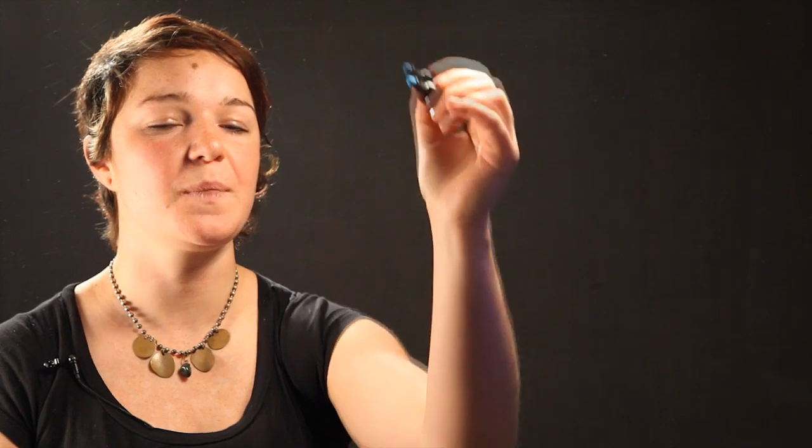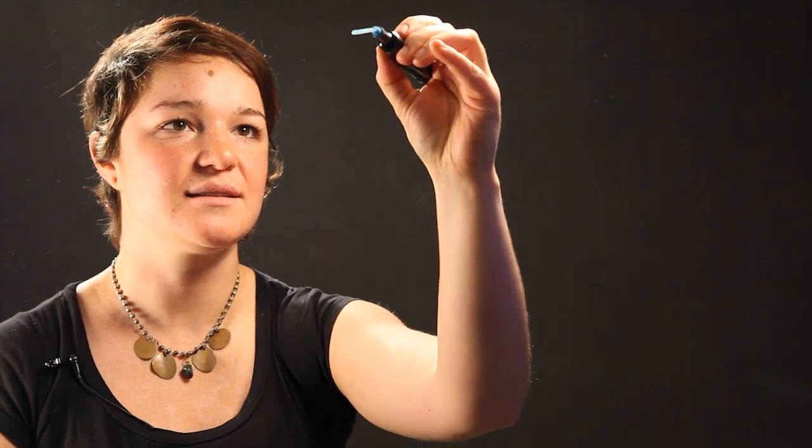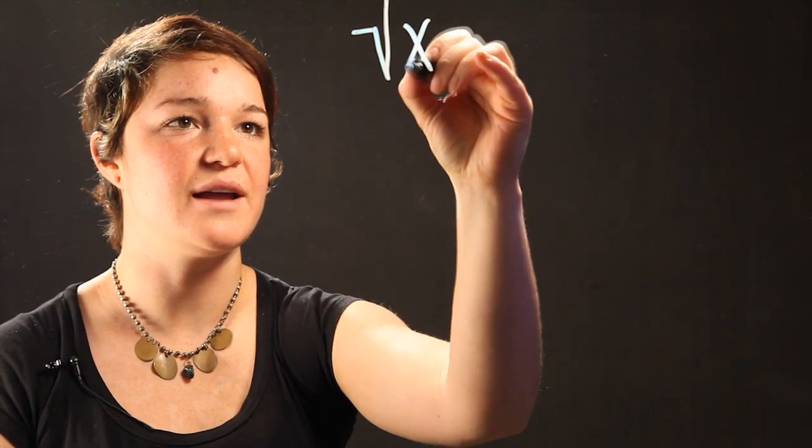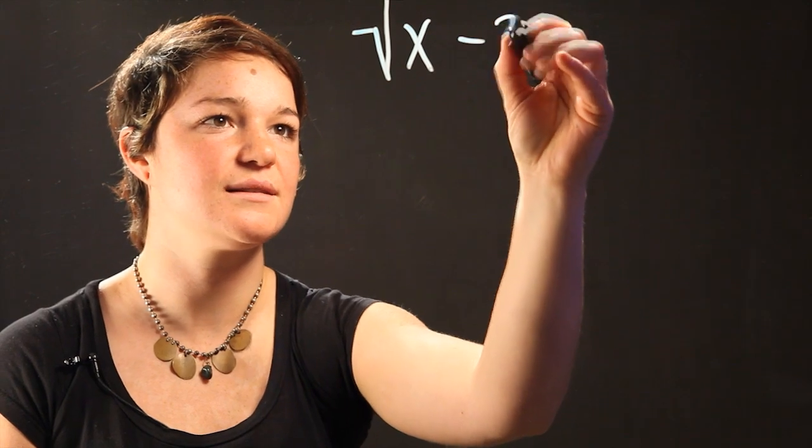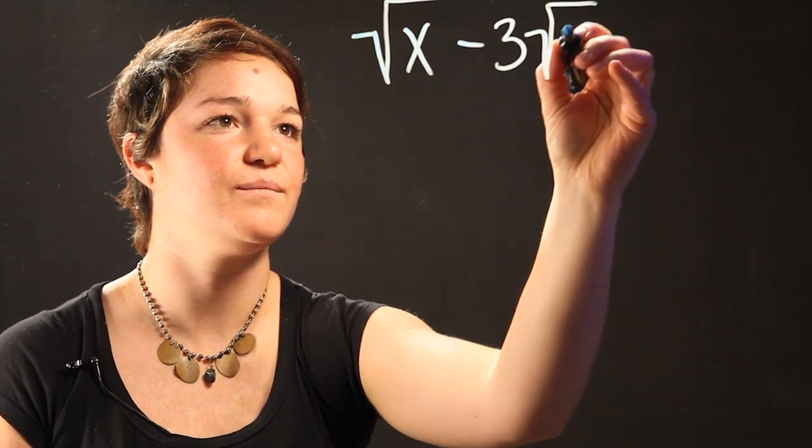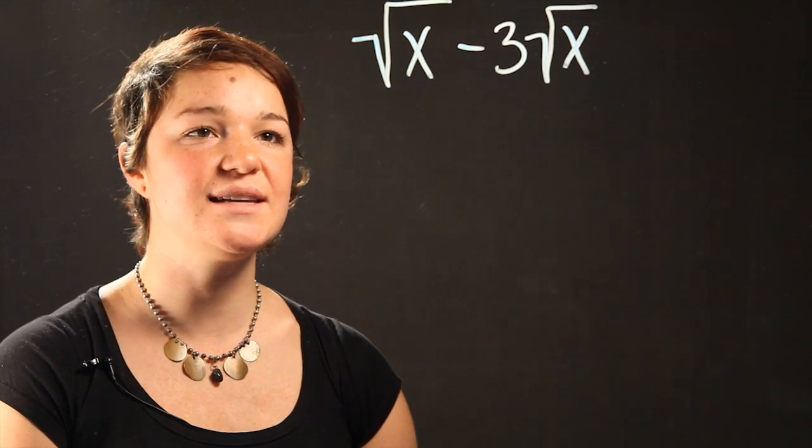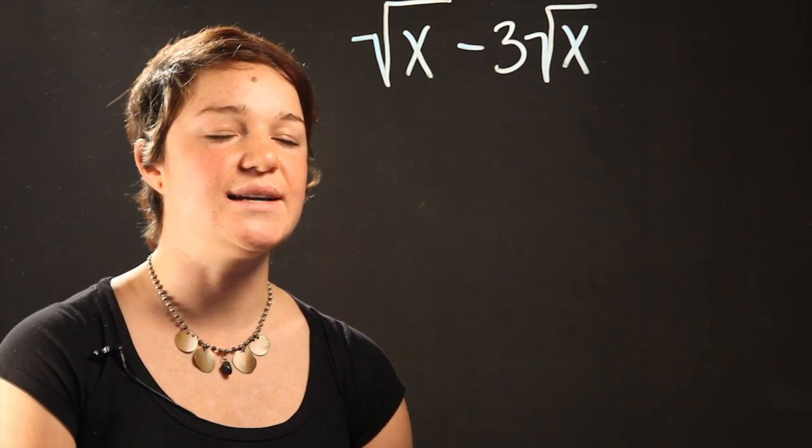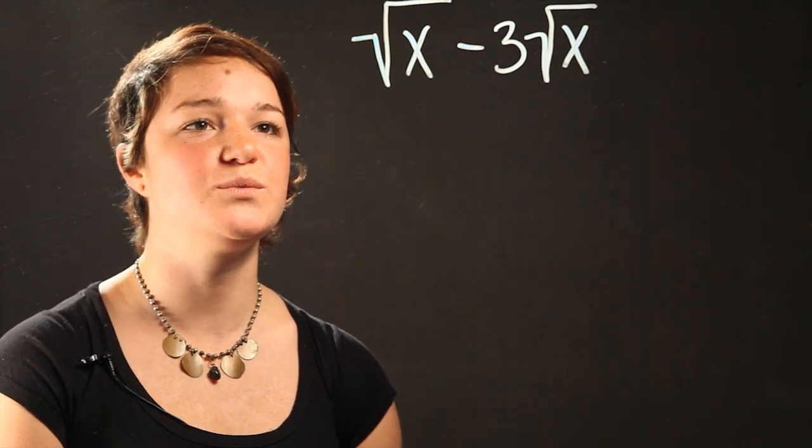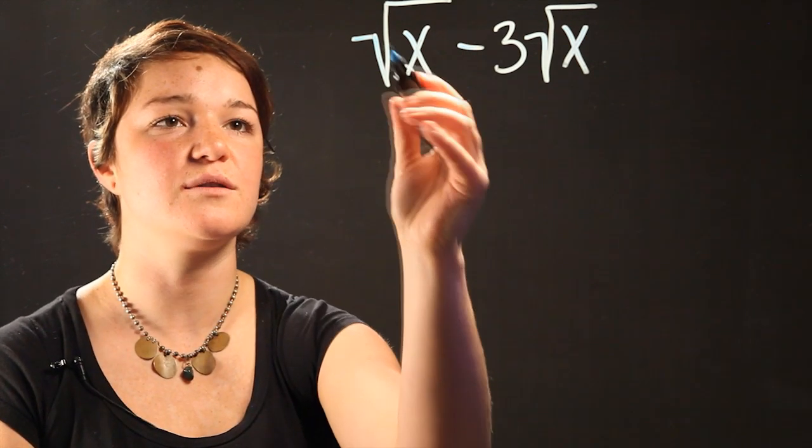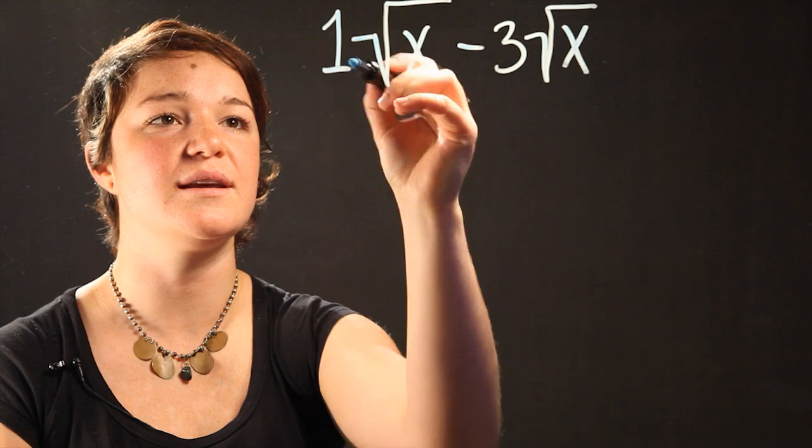The first equation that we're going to do, we're going to subtract radical x minus 3 radical x. So when we're subtracting radicals, we need to recognize that this radical has the number 1 in front of it.